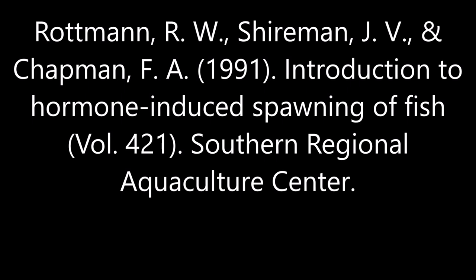Taking the Spawn. The eggs and milt of fish can be taken by several different methods: 1. tank spawning, 2. hand stripping, 3. surgically removing the eggs. The method of choice depends on the fish species, hatchery facilities, experience and skill of the hatchery staff, and the desired manipulations of eggs, sperm, or fertilized eggs.